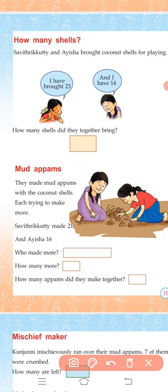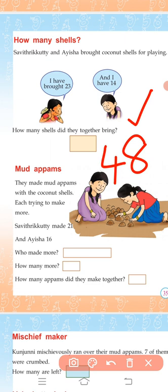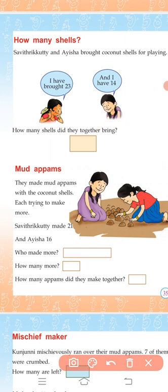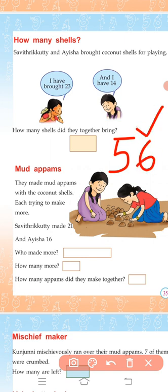Here is another number: 48. Eight is in the one's place, four is in the ten's place. Very good. Let's try one example: fifty-six. One's place? Six. Ten's place? Five. Right.